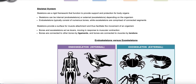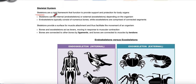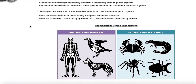Looking at the skeletal system, the skeleton is a rigid framework that provides support and protects your body organs. An endoskeleton is an internal type skeleton, which is what we have — made up of our bones connected at joints. The exoskeleton is an external skeleton where organisms have their skeleton on the outside, which protects them, as we see with crustaceans, arachnids, and insects.